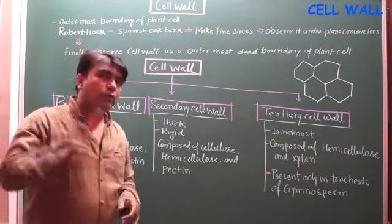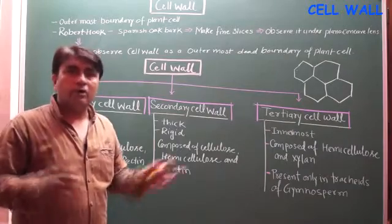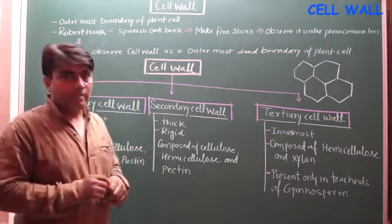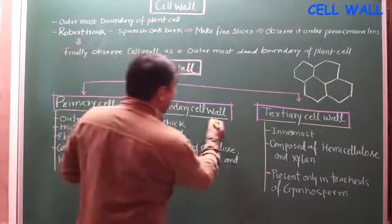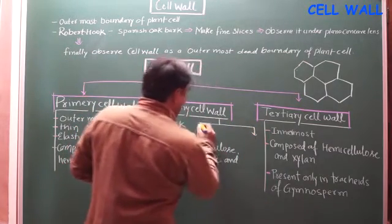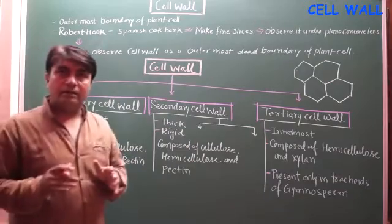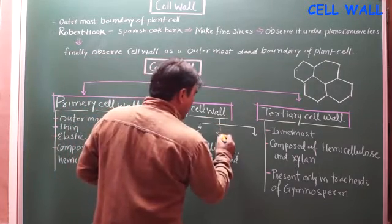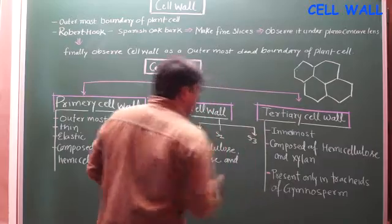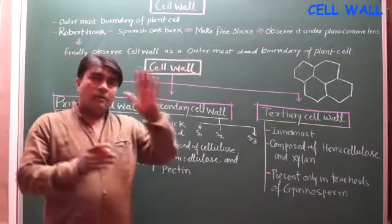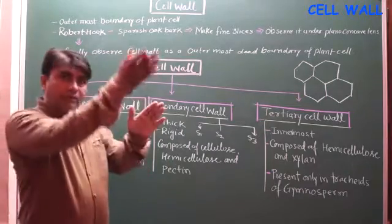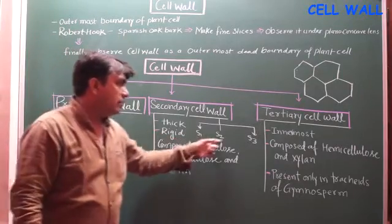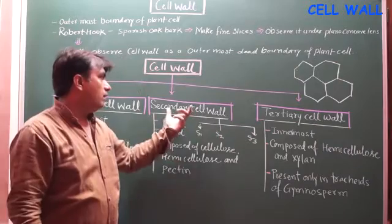The secondary cell wall is not found in meristematic cells or tissues, because they need to divide and this thick secondary cell wall would oppose division. The secondary cell wall is multi-layered — it is three-layered: S1 (outermost), then S2, then S3. So after the primary cell wall, we have secondary S1, then S2, and then S3. These three layers together constitute the secondary cell wall.